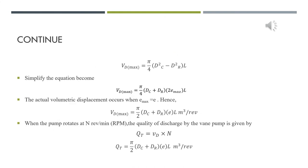Next, the maximum value of eccentricity produces the maximum volumetric displacement. The maximum volumetric displacement equals π/4 times the square of the diameter of the cam ring minus the square of the diameter of the rotor times the width of the rotor. After simplifying the equation, the maximum volumetric displacement equals π/2 times the diameter of the rotor times the eccentricity times the width.